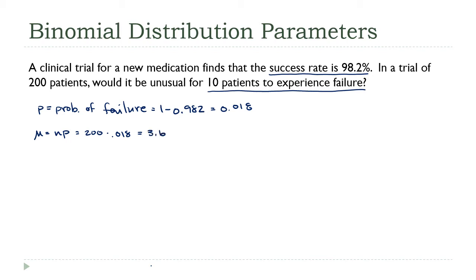So now I can get my mean. The mean is NP, it's still 200 patients regardless of how we look at it. So this is 200 times 0.018, which is 3.6. So on average, if we repeated this experiment with 200 patients over and over again, we would expect the average number of patients experiencing failure to be 3.6.